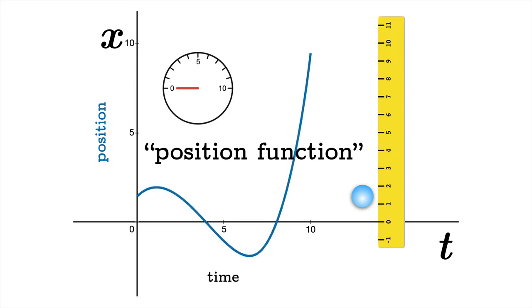As time changes the position changes and we can imagine plotting points for each of these positions. Once again I want to emphasize, although we plot position along the vertical axis, perhaps the motion we're studying has nothing to do with vertical motion. In this case our example came from watching a particle move left and right.